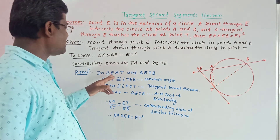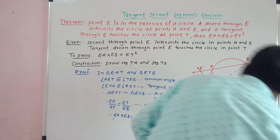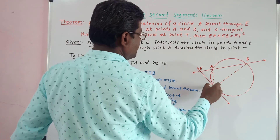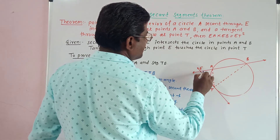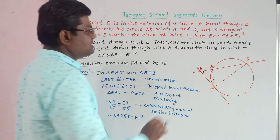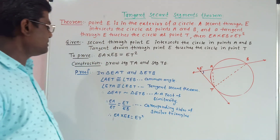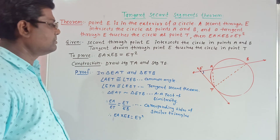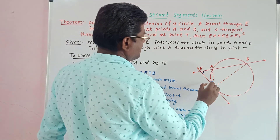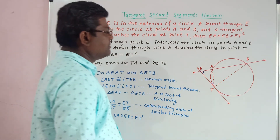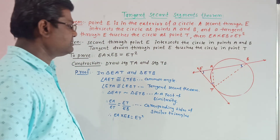Consider two triangles: triangle EAT and triangle ETB. In triangle EAT and triangle ETB, angle E is a common angle. Angle ETA is congruent to angle EBT. These two angles are congruent by the tangent-secant theorem — ET is the tangent and AB is the secant — so this angle equals this angle.